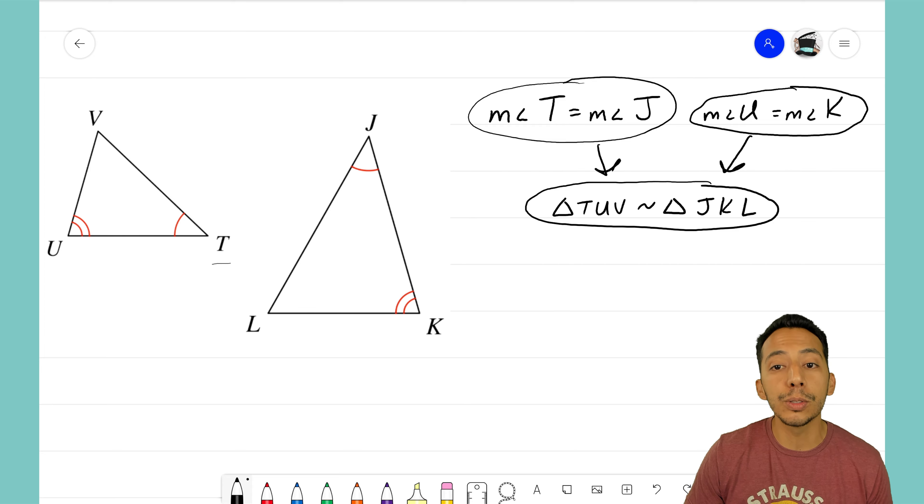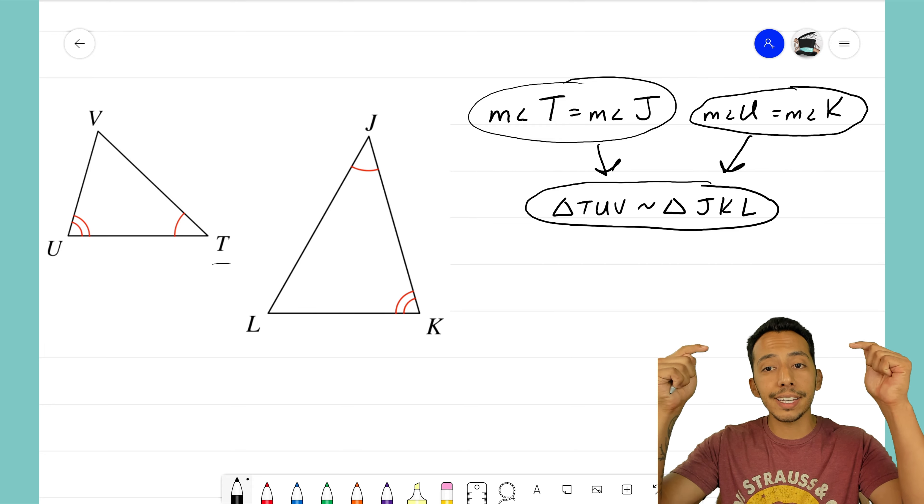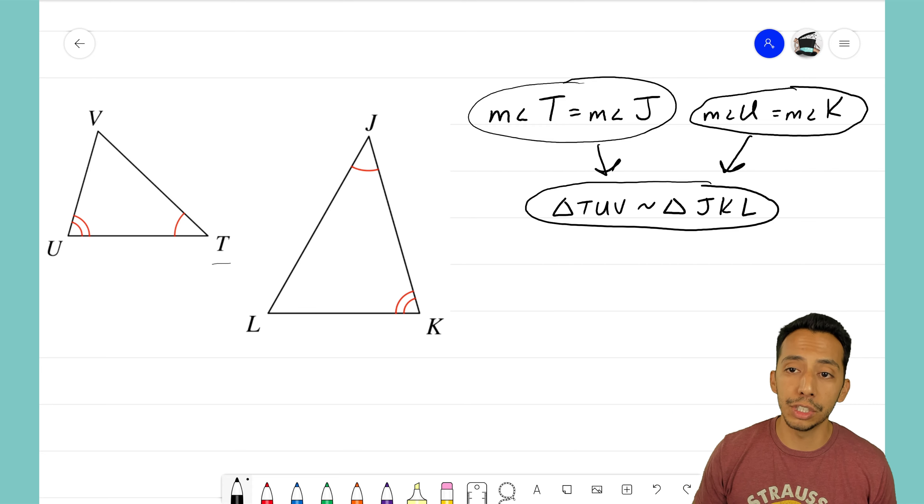We draw the arrows in to show that those two facts led to that conclusion. And what did we use? We used Angle-Angle similarity. This is a complete proof showing that those two triangles are similar. It's That Math Magician, and I'll see you on the next video.